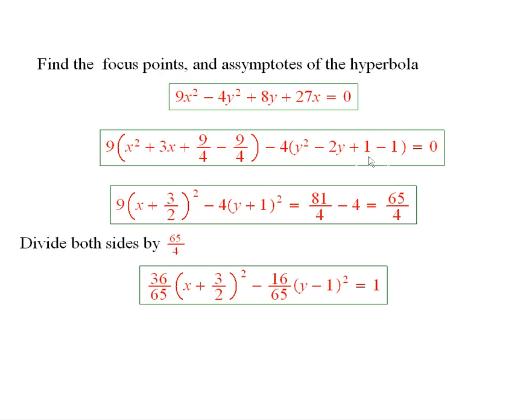And then we did something similar with the y's. We factored out the minus 4 and we got this. So we added in 1 and subtracted it off. So that means when we've completed the square we end up with this here.